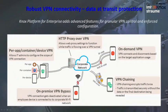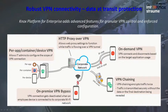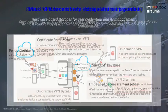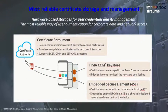For data in transit protection, we can configure per-application VPN, per-container VPN, or per-whole-device VPN. We can also configure on-demand VPN or on-premise VPN bypass — for example, once you connect to a corporate Wi-Fi network the VPN will be switched off automatically.